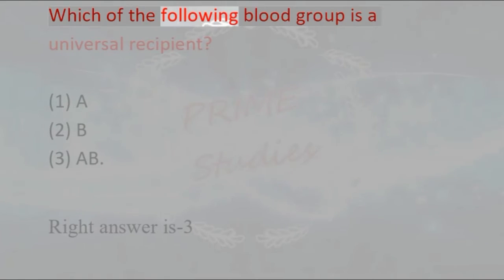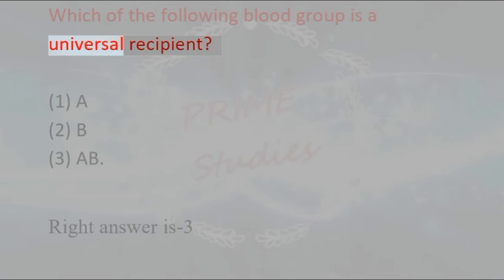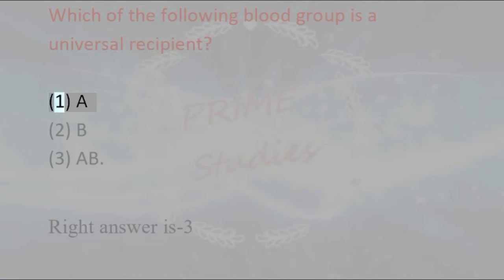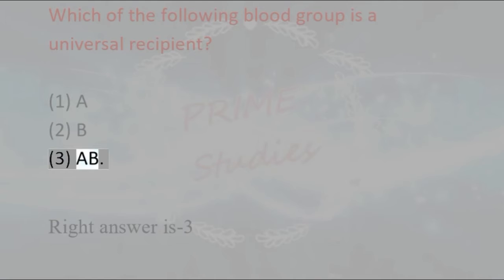Which of the following blood groups is a universal recipient? 1. A, 2. B, 3. AB. Right answer is 3 — AB.